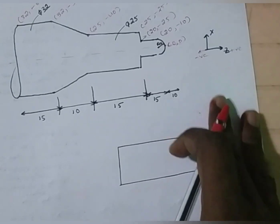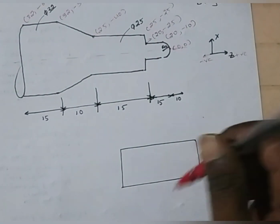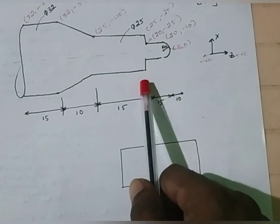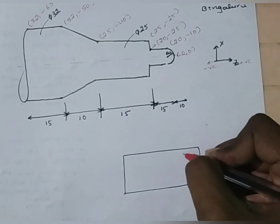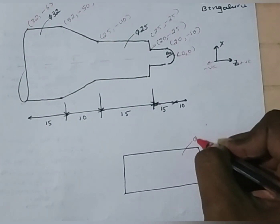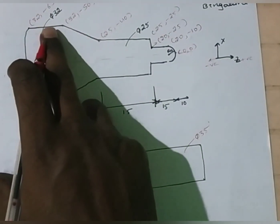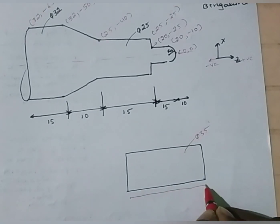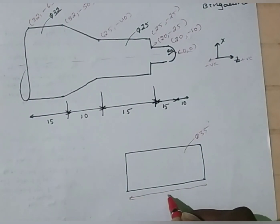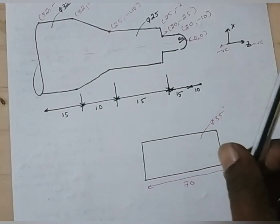Next, we have to assume the billet. The billet size should be greater than the given geometry. Here, the maximum diameter is 32. Hence, I am going to assume the billet size as 35 mm. And the maximum length is 65, so I am going to assume the length of the billet as 70 mm. You can assume more than that, but it should not be less than these values.